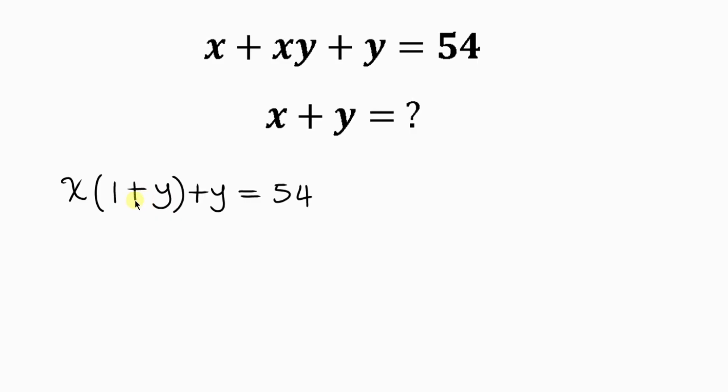In order to achieve that, I'm going to be adding 1 to both sides of the equation. So here we have x times 1 plus y, plus now I'll add 1 to y so this is 1 plus y, and to balance it up I'll add 1 to 54. 1 plus 54, that is it. Now notice that what I have here and what I have here are the same.